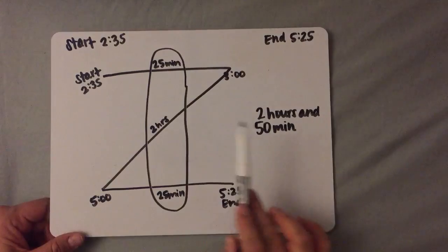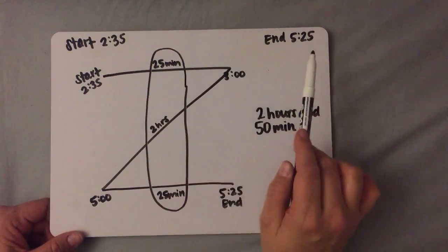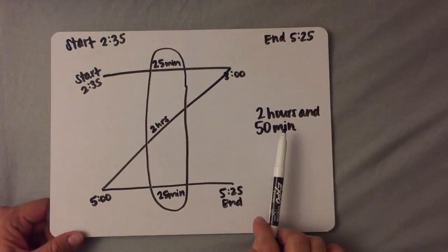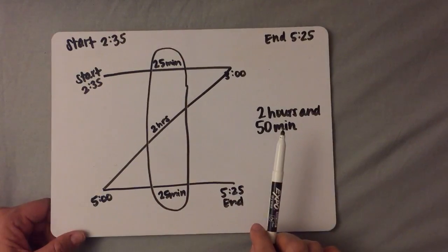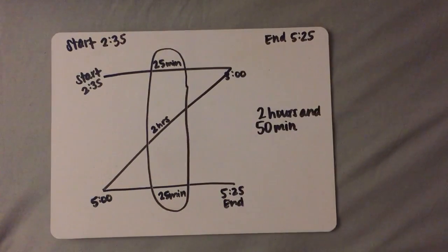So again, the elapsed time between 2:35 and 5:25 is 2 hours and 50 minutes. I hope you like the zoom method, I think it's pretty cool.